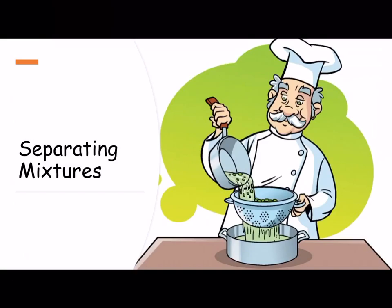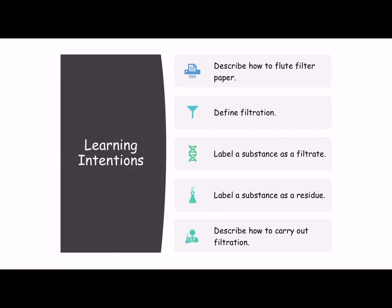A very simple picture here gives us an idea of how we could separate a solid from a liquid — you can see we do these things in our house every single day. So our learning intention is to describe how to flute filter paper. We're going to talk about filtration, label the substances as filtrate and residue, and describe how to carry out a filtration.